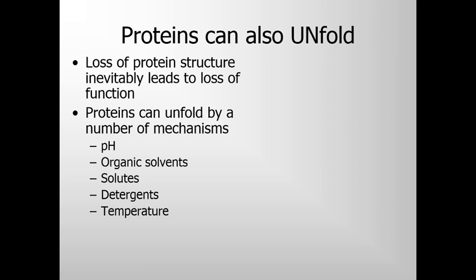Proteins can also unfold. Loss of protein structure inevitably leads to loss of function. Proteins can unfold by a number of mechanisms. These are the different conditions in which proteins can unfold in a test tube — for example, changes in pH, addition of organic solvents, addition of solutes, detergents, or changes in temperature. All these conditions can unfold a folded protein.